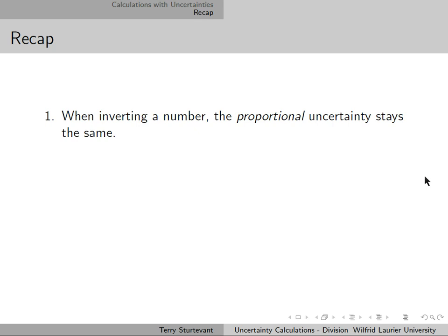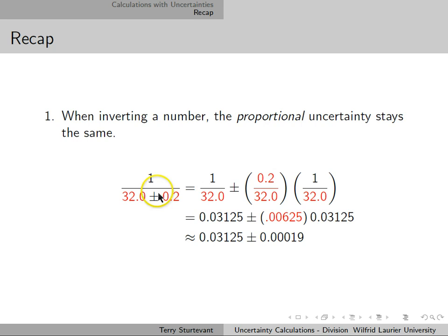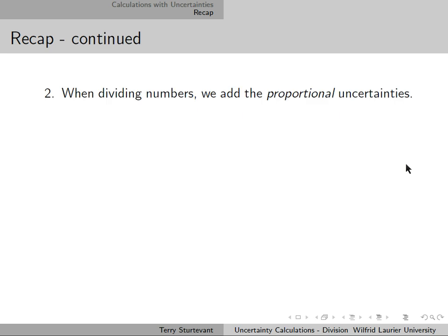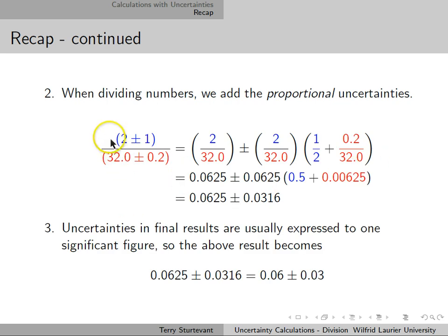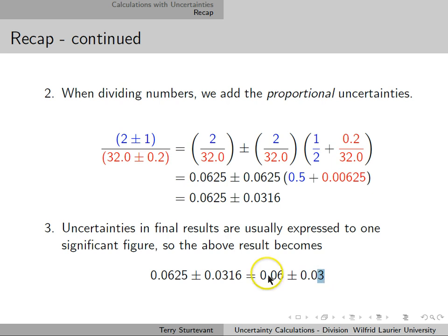When inverting a number, the proportional uncertainty stays the same — the uncertainty in 1/something has the same proportional uncertainty as the original quantity. When dividing numbers, we add proportional uncertainties. So (2 ± 1) / (32 ± 0.2) is calculated accordingly. Finally, as always, uncertainties in final results are usually expressed to one significant figure. Once we round the uncertainty to one significant figure, we make the last digit in the result match the same decimal place as the uncertainty.